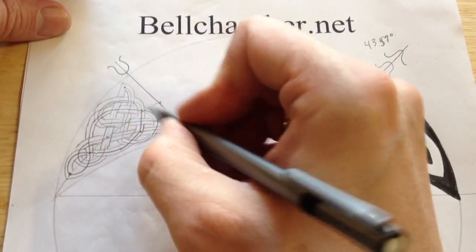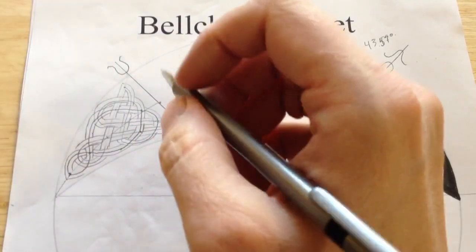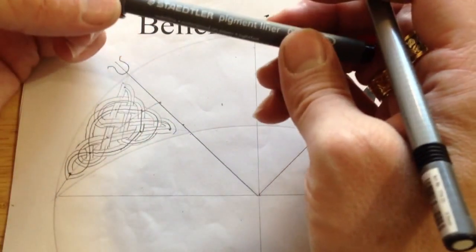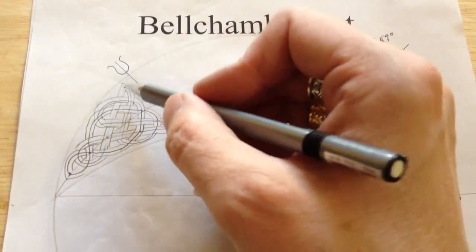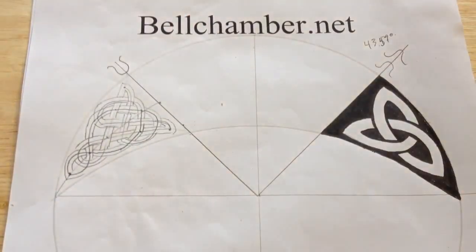Next segment, we're going to use one of your Stadler pigment liners and we're going to trace around your ribbon.